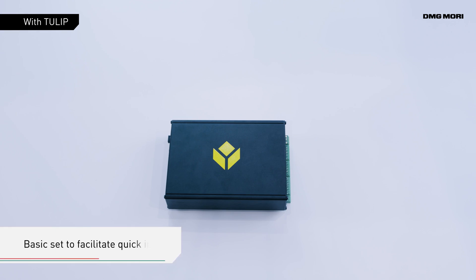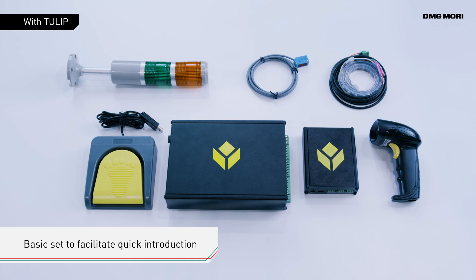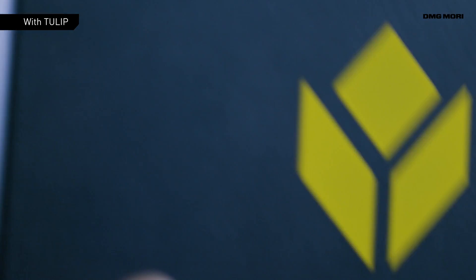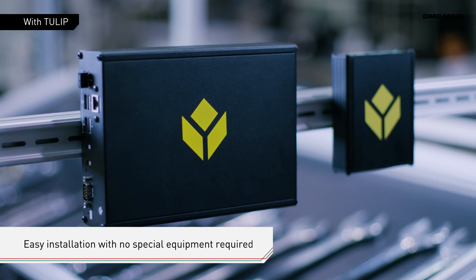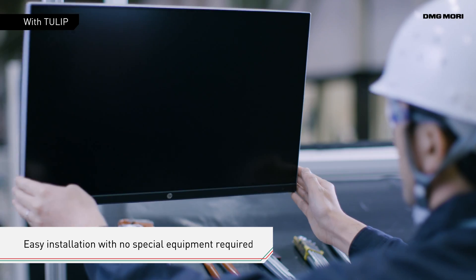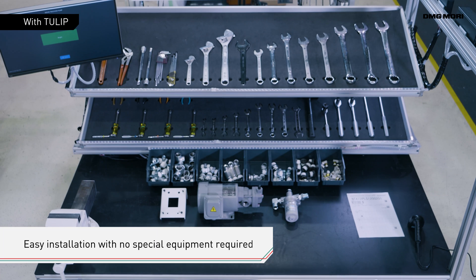The basic set necessary for introducing TULIP is very simple. You can start the installation right after receiving the basic set. The installation is also very easy, so no special equipment or change to the current shop environment is necessary.